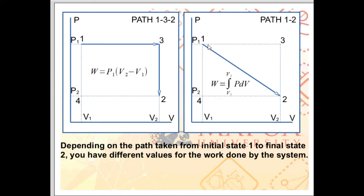For the direct path from initial state 1 to final state 2, both pressure and volume change, so the work done is equal to the integral of P dV from V1 to V2. Across all 3 paths, you get different values for the work done, so when calculating the work done by the system from initial state to final state, you need to consider the path taken.